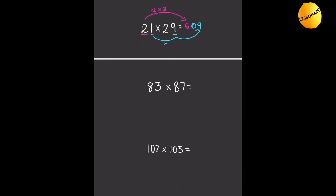Let's go with 83 times 87. We do the same thing — we multiply the tens place, which is 8, by its next highest number. So 8 times 9 is 72. Then we multiply the units digits: 7 times 3 is 21, and we write that 21 there. So the answer is 7221. Now let's move on to three-digit numbers.